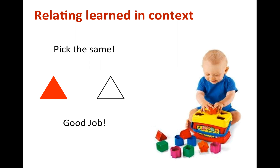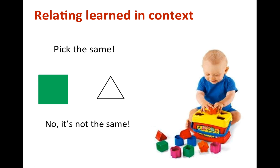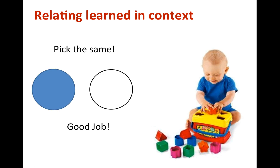If the kid picks the square, the parent says 'no, it's not the same.' So progressively, as the kid learns to match the objects and the holes in presence of cues like 'pick the same,' as with the blue circle here, he learns what this cue means. This is what we call a contextual cue. The child learns to relate objects and holes under the influence of the context.